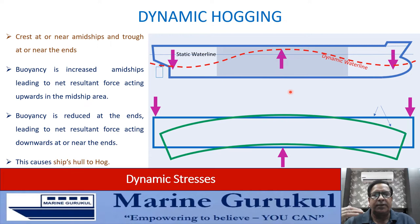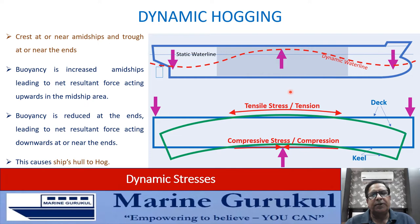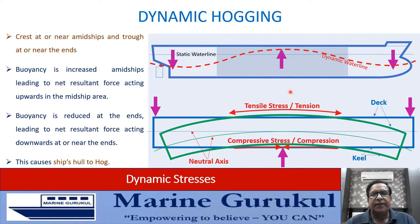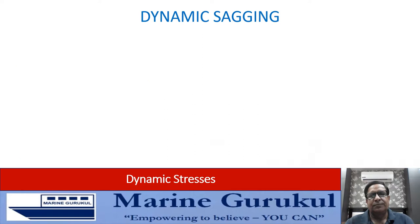When the vessel hogs, as we learned in static stresses, the deck and upper regions would be under tensile stress, and the lower parts and keel region would be under compressive stress. During longitudinal bending there will be one axis along which there is no stress — the neutral axis. This longitudinal bending induced by wave motion is termed as dynamic hogging.